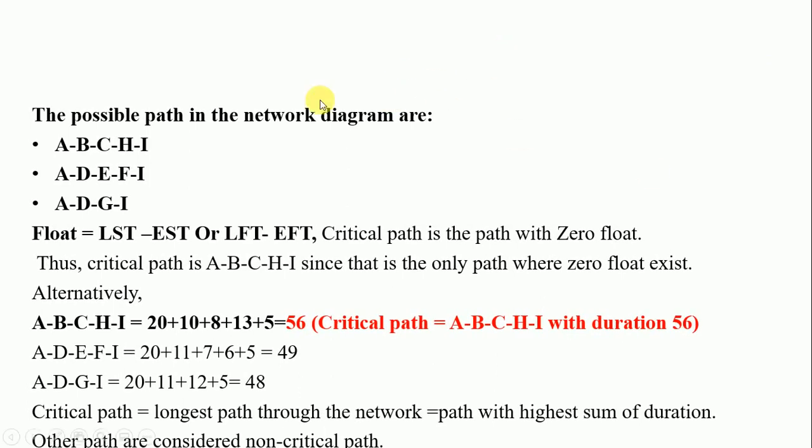We have three paths in that network: A, B, C, H, I; A, D, F, I; and A, D, G, I. Another simpler technique is to add the duration under each of these paths. The one that gives the highest value, that path with the highest value is called the critical path. Any other ones are called the non-critical path.